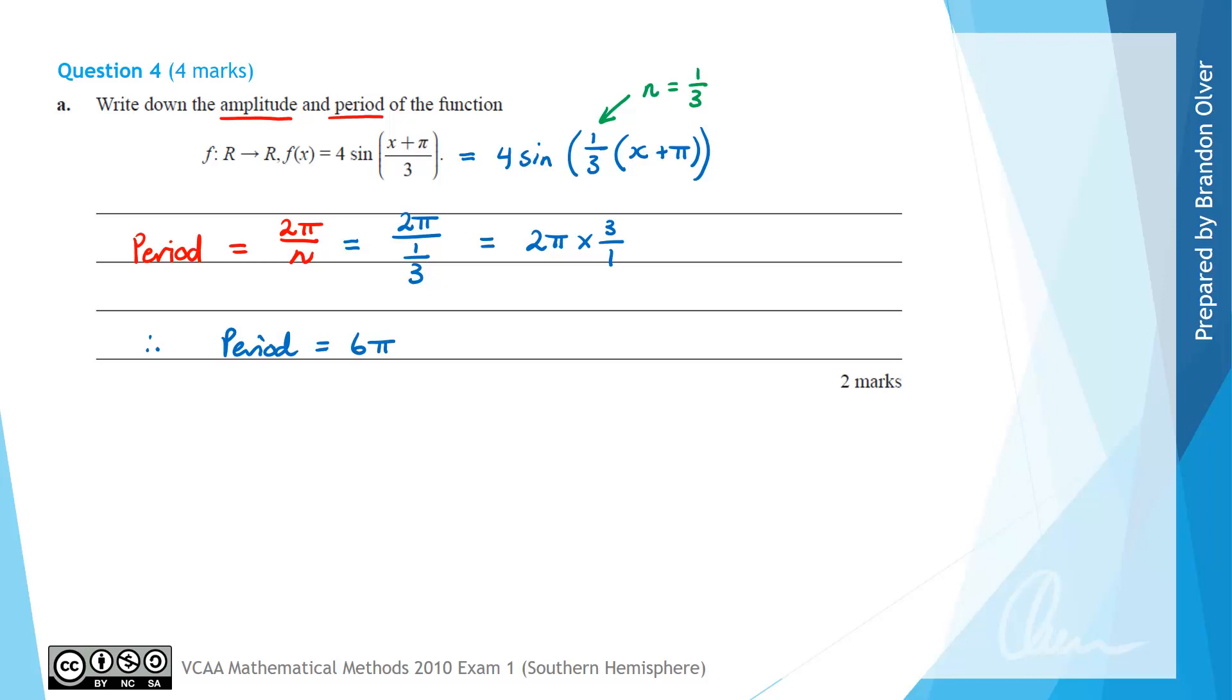The amplitude is relatively straightforward to find when your function is given in this form, because it's simply the number that's multiplying the sine or the cosine function, but we would ignore the sign on it if it was negative. So therefore, the amplitude for this function is 4. So these are the two answers that we need to give for part A of this question.